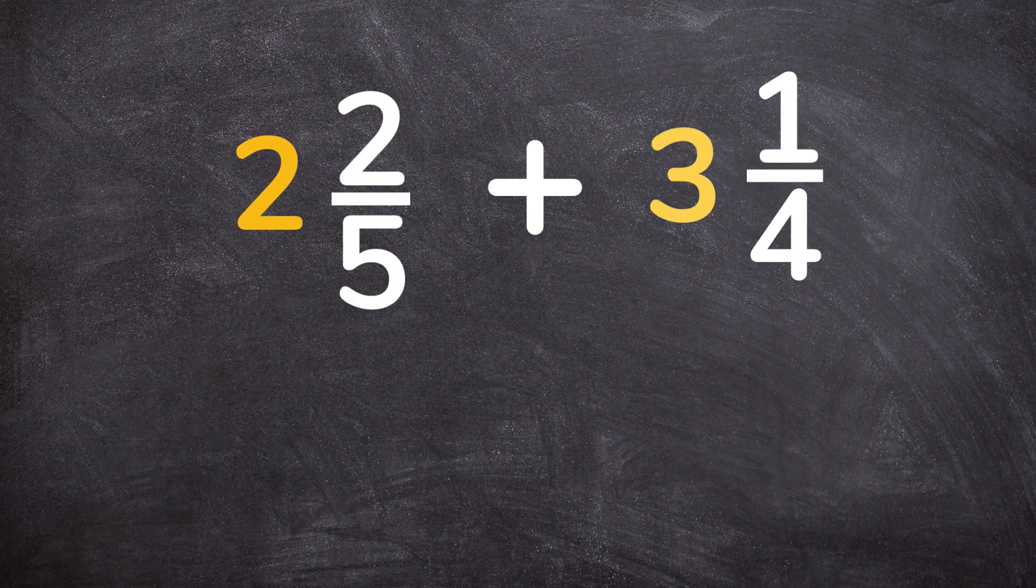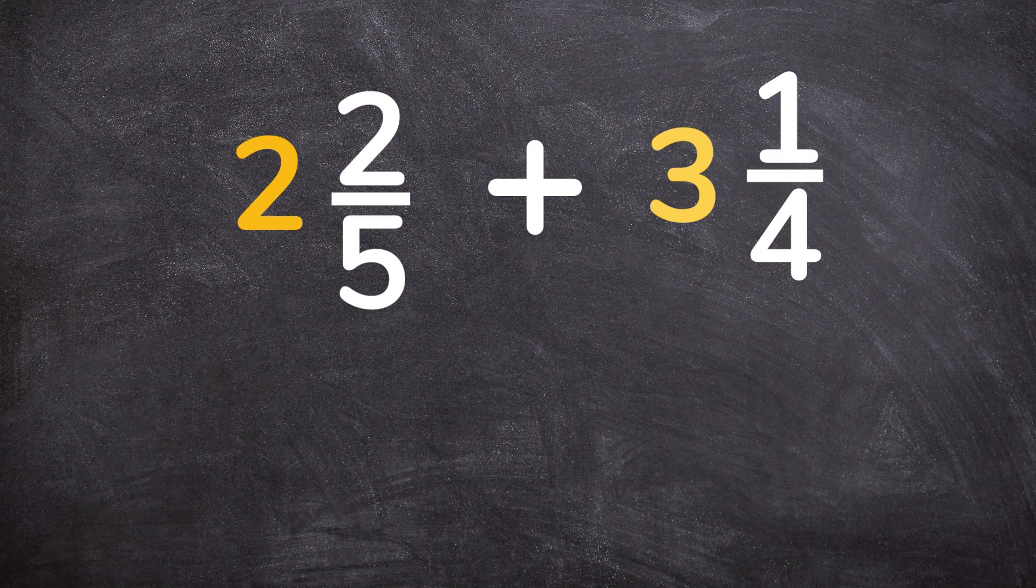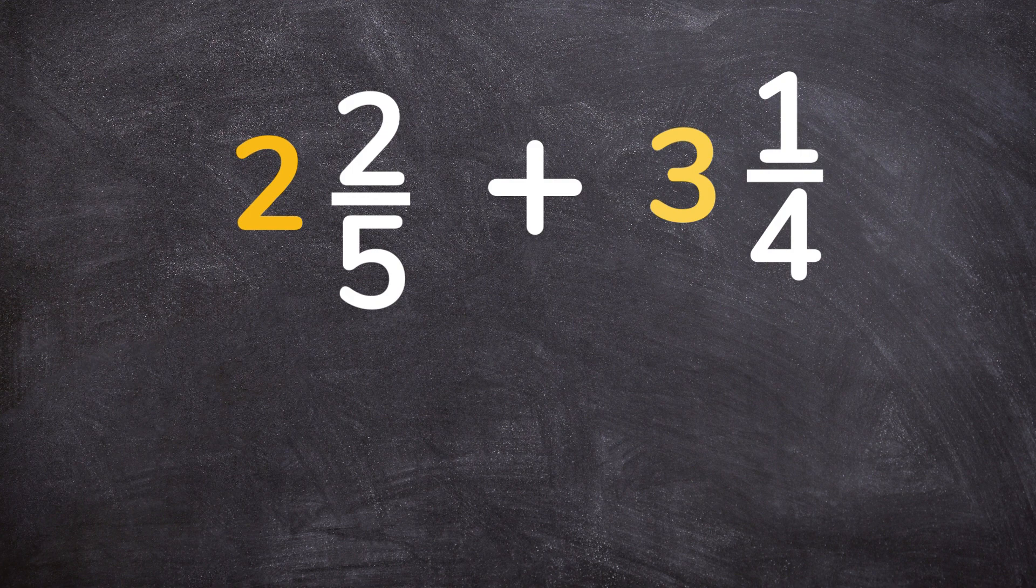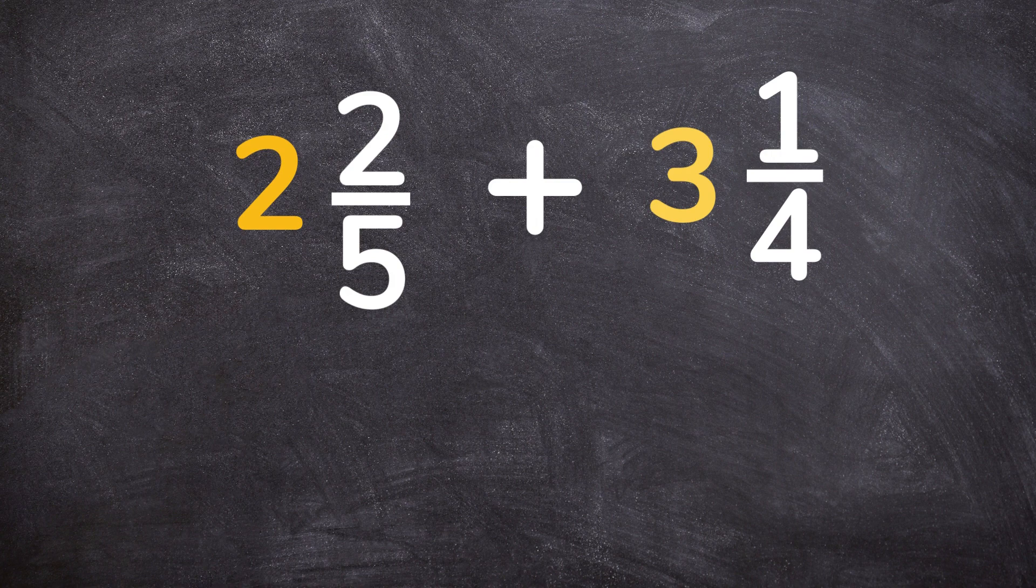Let's say we have 2 as a whole number and two-fifths, so you'll read it as two and two-fifths plus three and one-quarter. These are two mixed numbers that we are adding together.